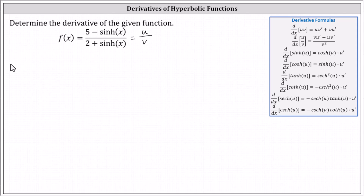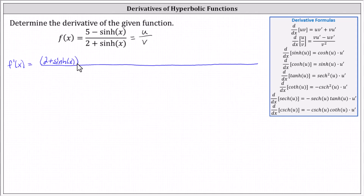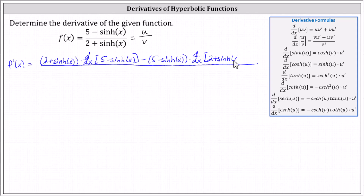This indicates f prime of x equals the quotient where the numerator is v times u prime — the denominator, two plus hyperbolic sine x, times the derivative of the numerator, which is the derivative with respect to x of five minus hyperbolic sine x — and then minus u times v prime, which is the numerator five minus hyperbolic sine x times the derivative of the denominator with respect to x. This is all divided by the square of v, or the square of two plus hyperbolic sine x.